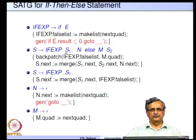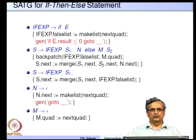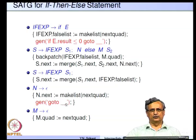Since this is an S-attributed grammar used with LR parsing, we want to perform an action at the end of this particular handle just before the reduction by this handle happens. That is the reason for breaking up these productions. We also have markers N and M; these markers are required to generate appropriate goto statements at these places.